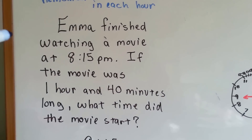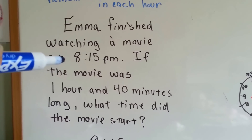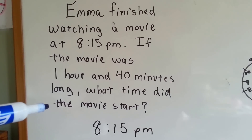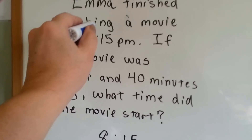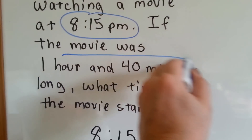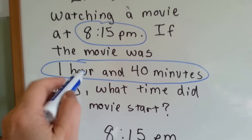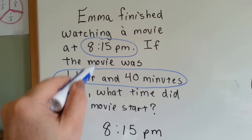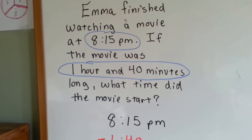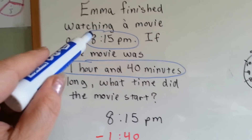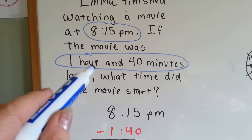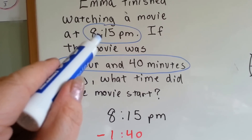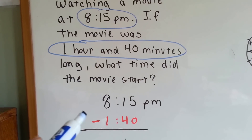Emma finished watching a movie at 8:15 PM. If the movie was 1 hour and 40 minutes long, what time did the movie start? We know the time the movie finished and how long it was. We need these two pieces of information to answer our question. The movie finished at 8:15 PM, and we have to go backwards an hour and 40 minutes and take that away to figure out what time the movie started.